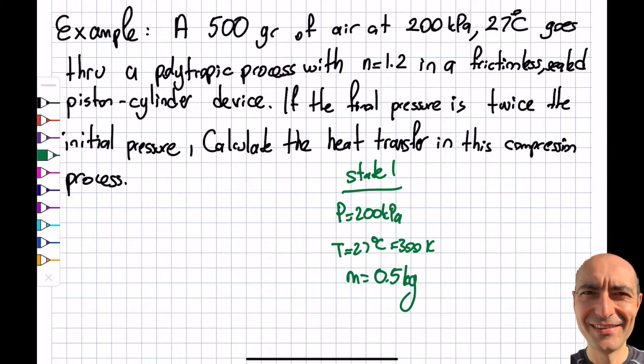Goes to a polytropic process, got to read the question carefully, polytropic process with N is equal to 1.2 in a frictionless sealed piston cylinder device. And let's look at the final state, state 2. The final pressure is twice the initial pressure, so P2 is 400 kilopascals. Just also know that the mass will be conserved because of the closed system.